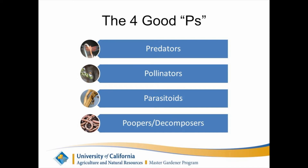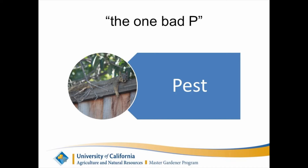There are four good P's: predators, pollinators, parasitoids, and poopers, also called decomposers. We will ask you to name examples of pests that you can find in the garden and explain why they are a pest. That is the one bad P — pests.